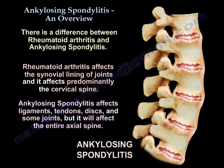The pain associated with ankylosing spondylitis gets better with exercise and not with rest. There is a key difference between rheumatoid arthritis and ankylosing spondylitis: rheumatoid arthritis affects the synovial lining of joints and predominantly the cervical spine, whereas ankylosing spondylitis affects ligaments, tendons, discs, and some joints, involving the entire axial spine.